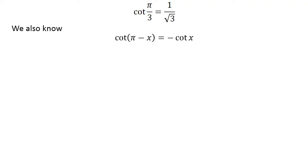We also know the trigonometric identity cot(π - x) = -cot(x). The verification of this identity has been explained in the video appearing in the upper right corner of this video. The link of the video is also mentioned in the description section.